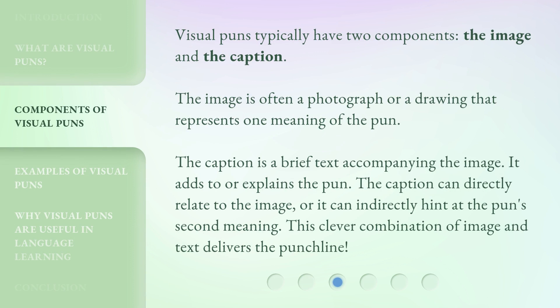Visual puns typically have two components: the image and the caption. The image is often a photograph or a drawing that represents one meaning of the pun. The caption is a brief text accompanying the image — it adds to or explains the pun. The caption can directly relate to the image, or it can indirectly hint at the pun's second meaning. This clever combination of image and text delivers the punchline.